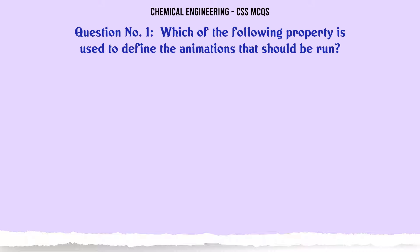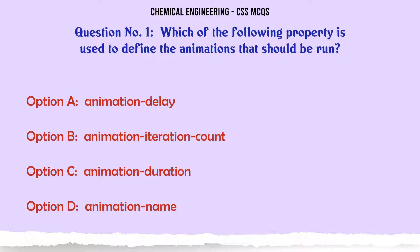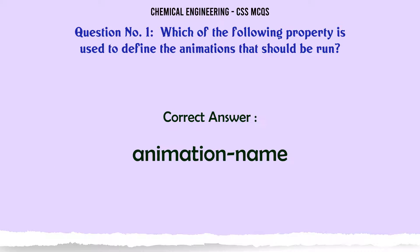Which of the following property is used to define the animations that should be run? A. Animation delay. B. Animation iteration count. C. Animation duration. D. Animation name. The correct answer is: Animation name.